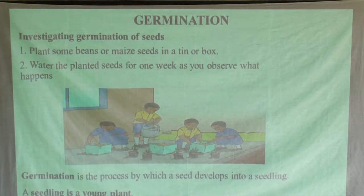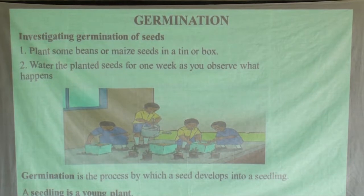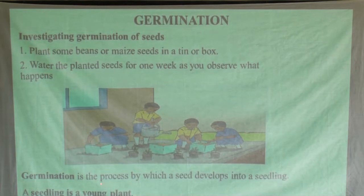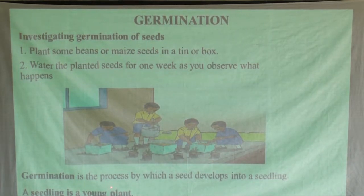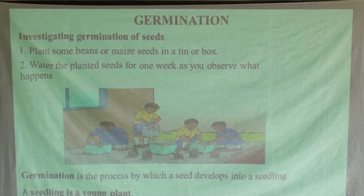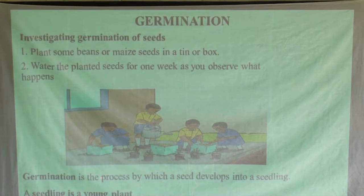From this, we can look at a simple definition of germination. We can define germination as the process by which a seed develops into a seedling. One can also say germination is the process by which a seed turns into a younger plant. This gives us a clear understanding of the term germination.